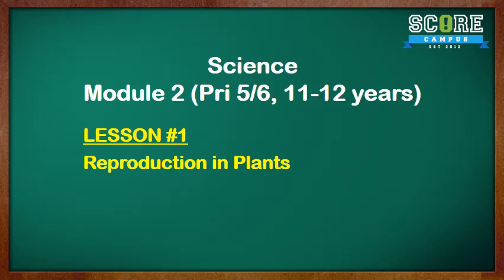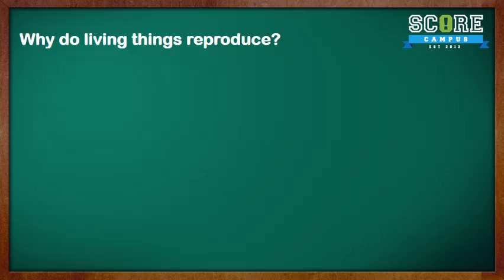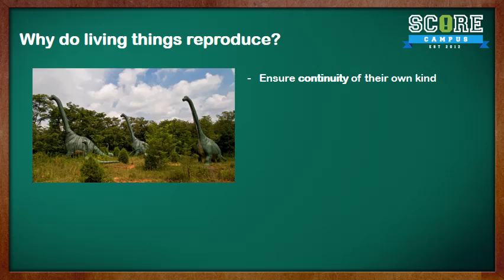This is the first lesson for Science P5/P6, and this is about reproduction in plants. The first question is: why do living things reproduce? Living things reproduce to ensure continuity of their own kind and to prevent them from going extinct, like the dinosaurs you see over here.